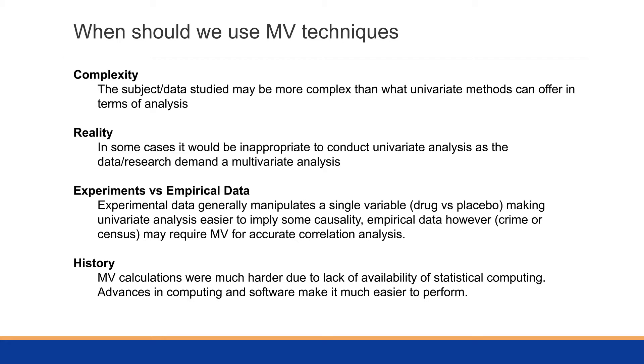With experiments versus empirical data, experimental data generally manipulates a single variable, making univariate analysis easier to imply some causality. But with empirical data like crime or census data, it may require multivariate analysis for a better correlation or covariance analysis.